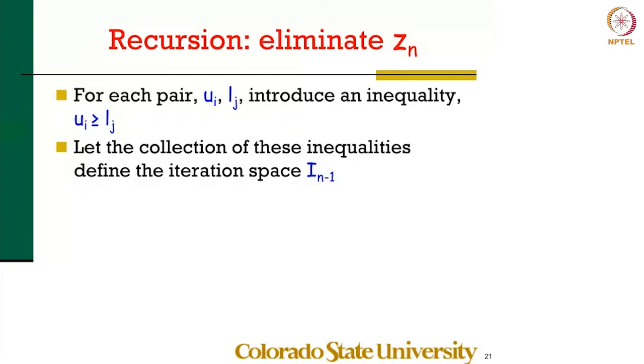For each pair u_i, l_j, an upper bound and lower bound, you introduce a new inequality: u_i expression is greater than or equal to l_j expression.